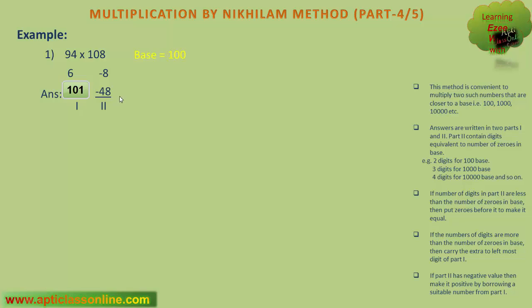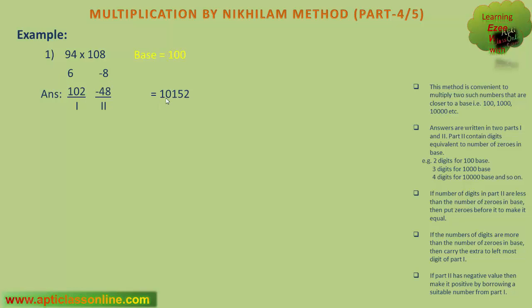Now the new value for part 1 is 101 and the new value for part 2 is 52. Before finalizing the answer, we will have to check whether part 2 contains as many digits as the number of zeros in the base. It already contains 2 digits. Thus the final answer will be 10152.